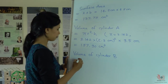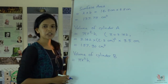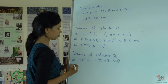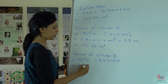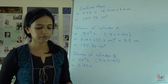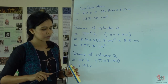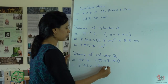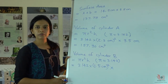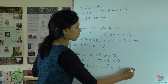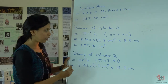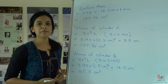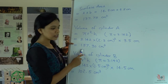Now for tall and thin cylinder B, the formula remains the same: π r² h, with π = 3.142. Measuring cylinder B, the diameter is 3 cm, so the radius is 1.5 cm. The height of the tall cylinder is 14.5 cm. Using π r² h: 3.142 × (1.5)² × 14.5 = 102.5 cm³.